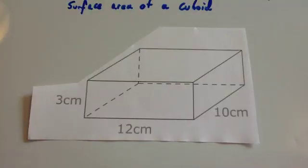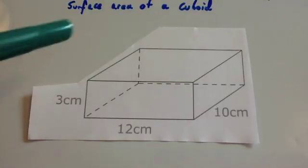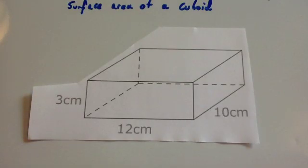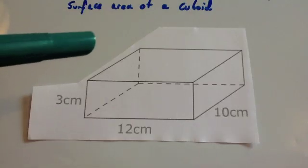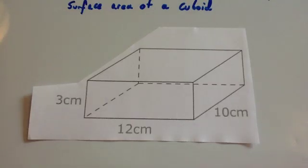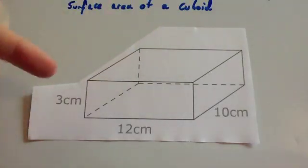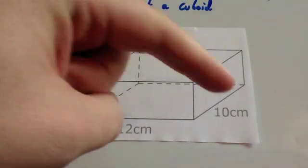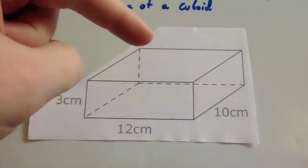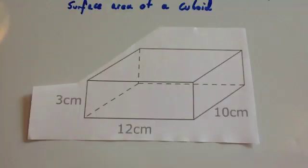In this video we're going to look at how to find the surface area of a cuboid. Here's a cuboid and it's got six rectangular faces: the front, the back, the left hand side, the right hand side, the top and the bottom. To get the surface area of a cuboid, you've got to work out the area of all six of the faces and add them up.